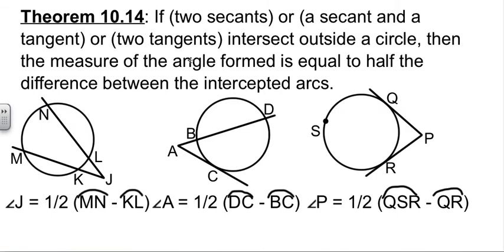They intersect outside the circle. It doesn't matter which case it is. If they intersect outside the circle, then the measure of the angle between the two lines is half the difference in the two arcs.